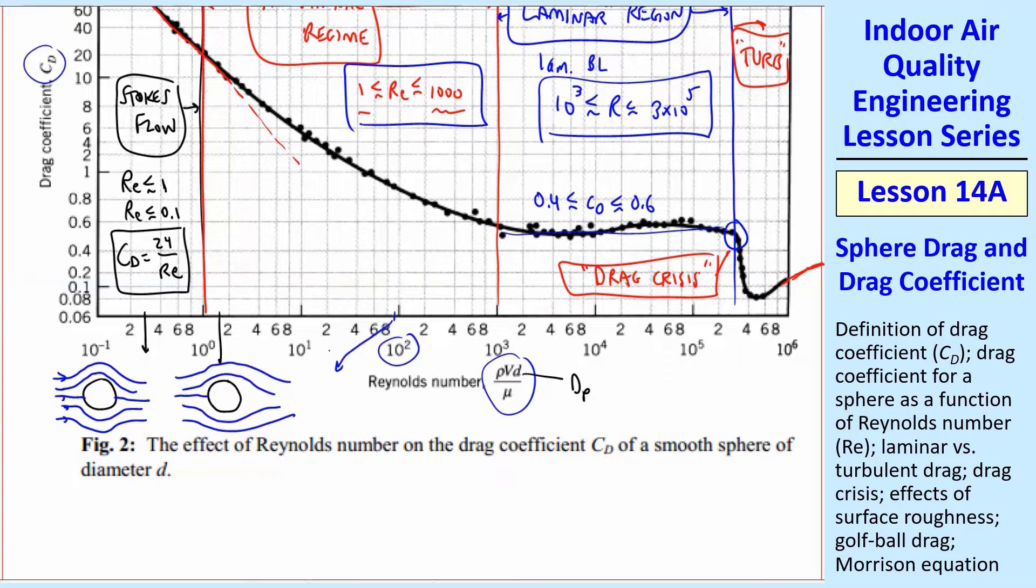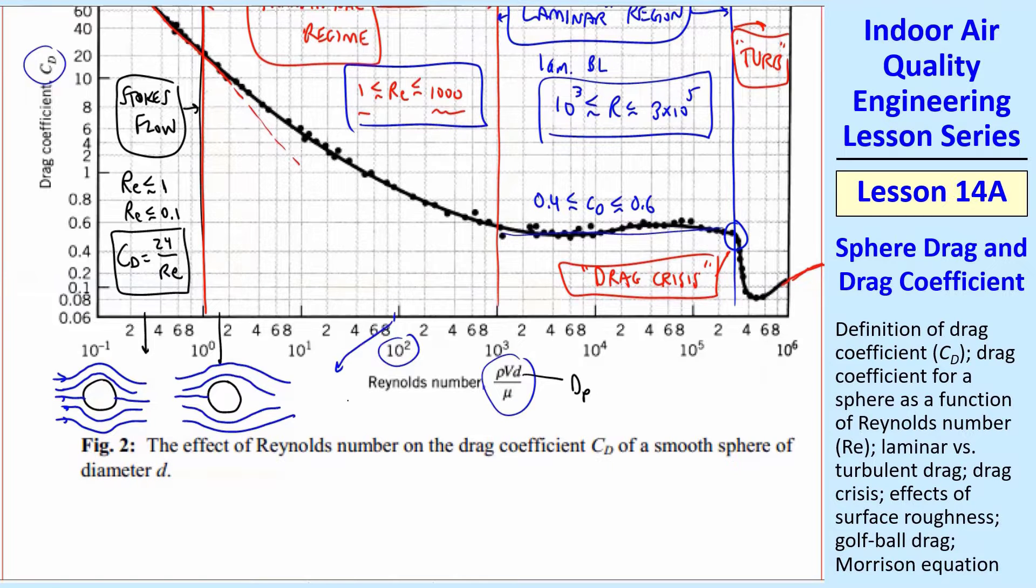I did my PhD research on all this, so this is all near and dear to my heart. Around 90, you start to get what's called a Carmen Vortex Street. So you have a laminar boundary layer that separates, and it starts to be unsteady, and you get a KVS, Carmen Vortex Street.